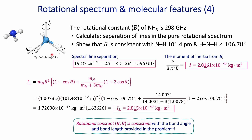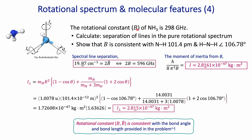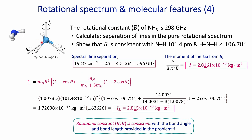We also learned about symmetric rotors and the two different types — prolate and oblate — and where the separation between lines in the pure rotational spectrum for symmetric rotors comes from: that separation is 2 times the rotational constant. I hope this is helpful. I'll see you later. Thank you.